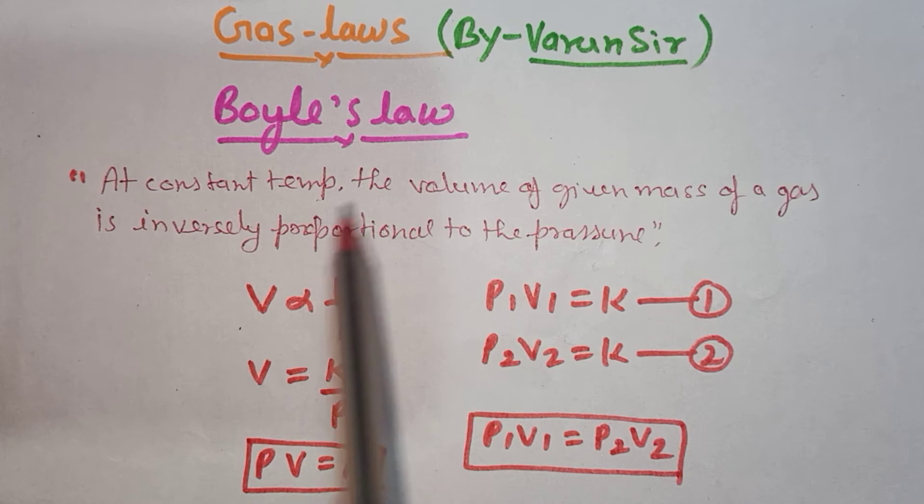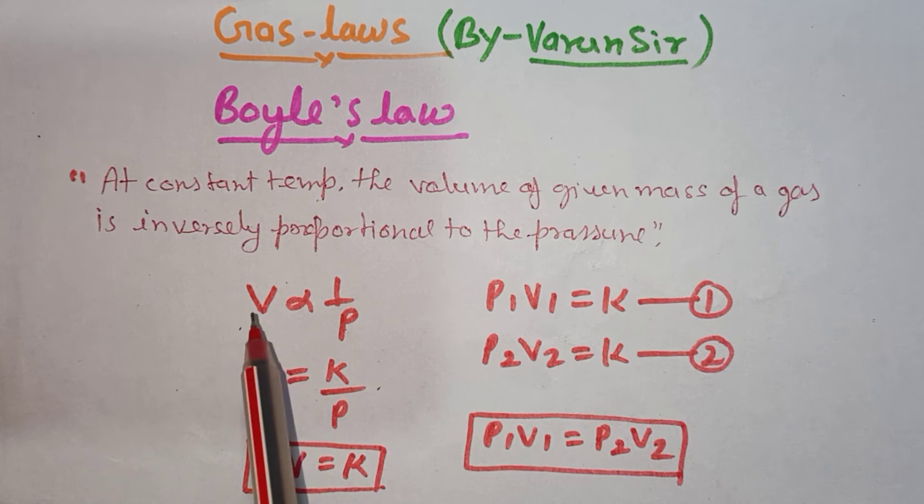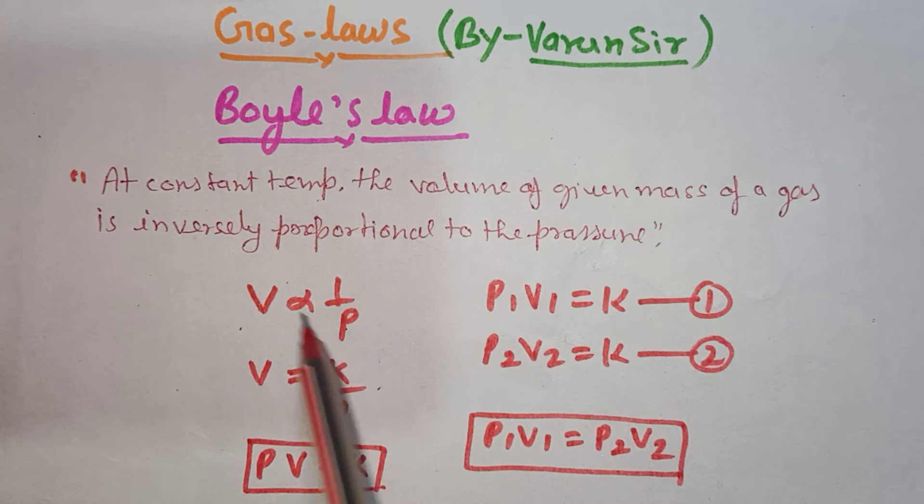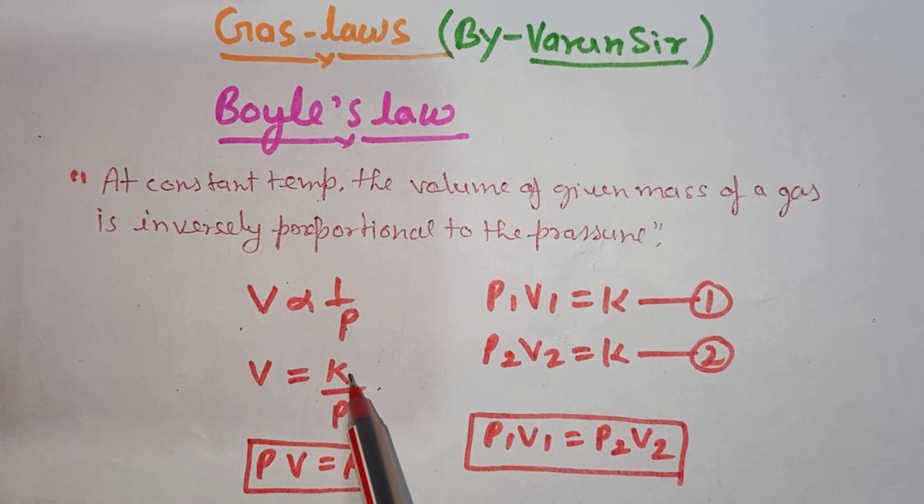یعنی کسی بھی gas کا جو volume ہوگا وہ اس کے pressure کے inversely proportional ہوگا. جیسے مان لو کوئی gas ہے اس کا volume V ہے اس کا pressure P ہے تو V inversely proportional P. Inversely proportional کا sign ہے، ہم نے K constant لیا تو V is equal to K upon P.